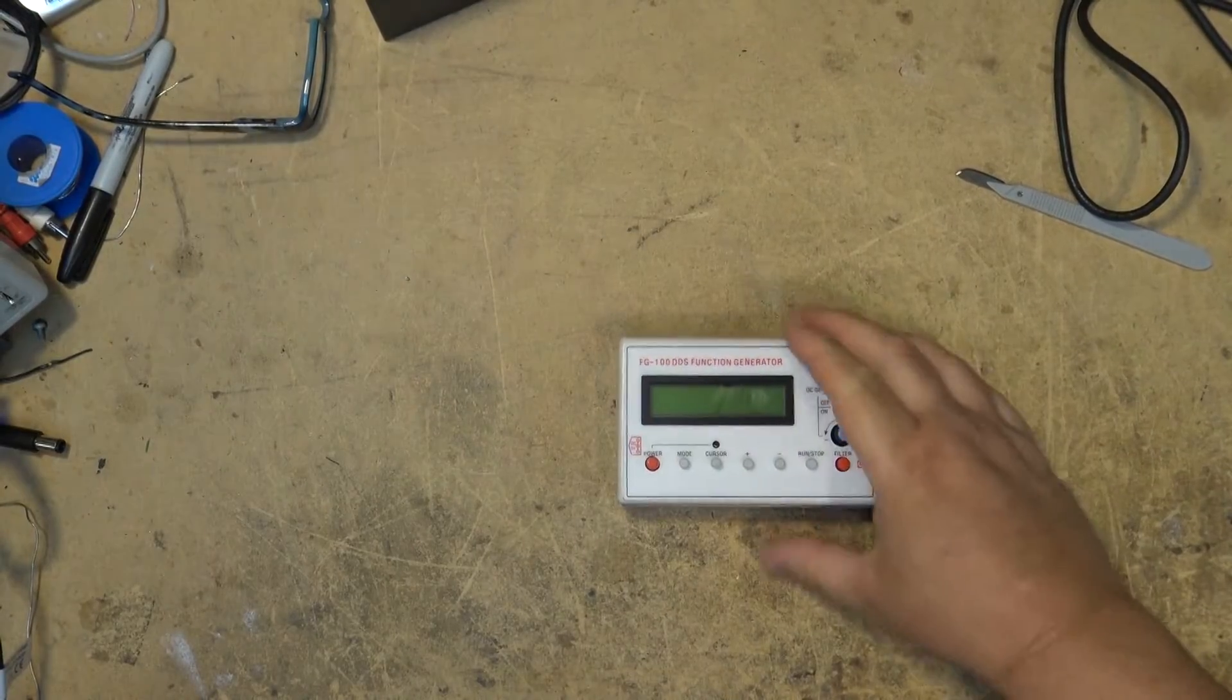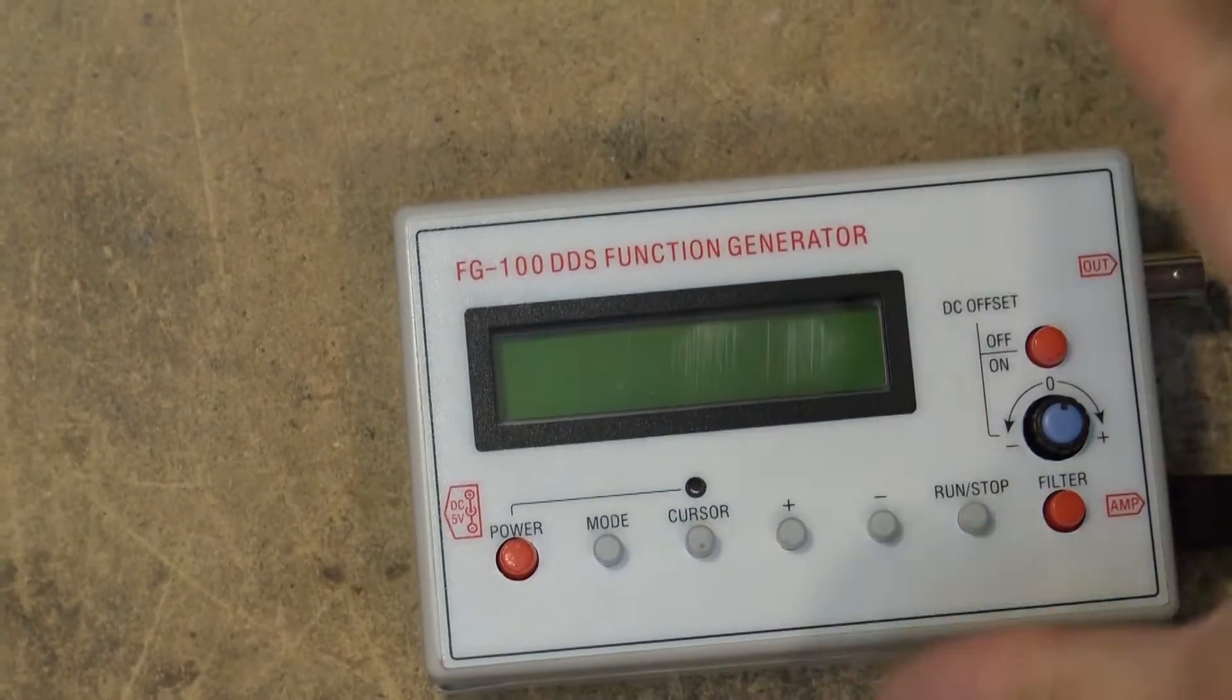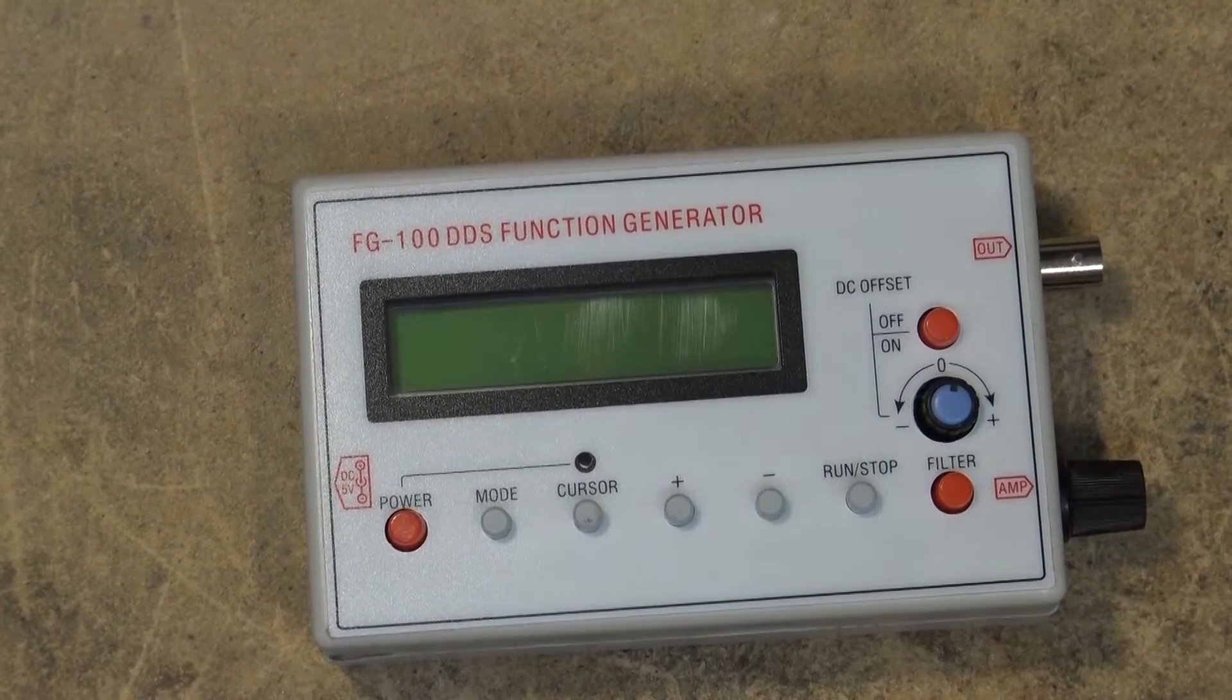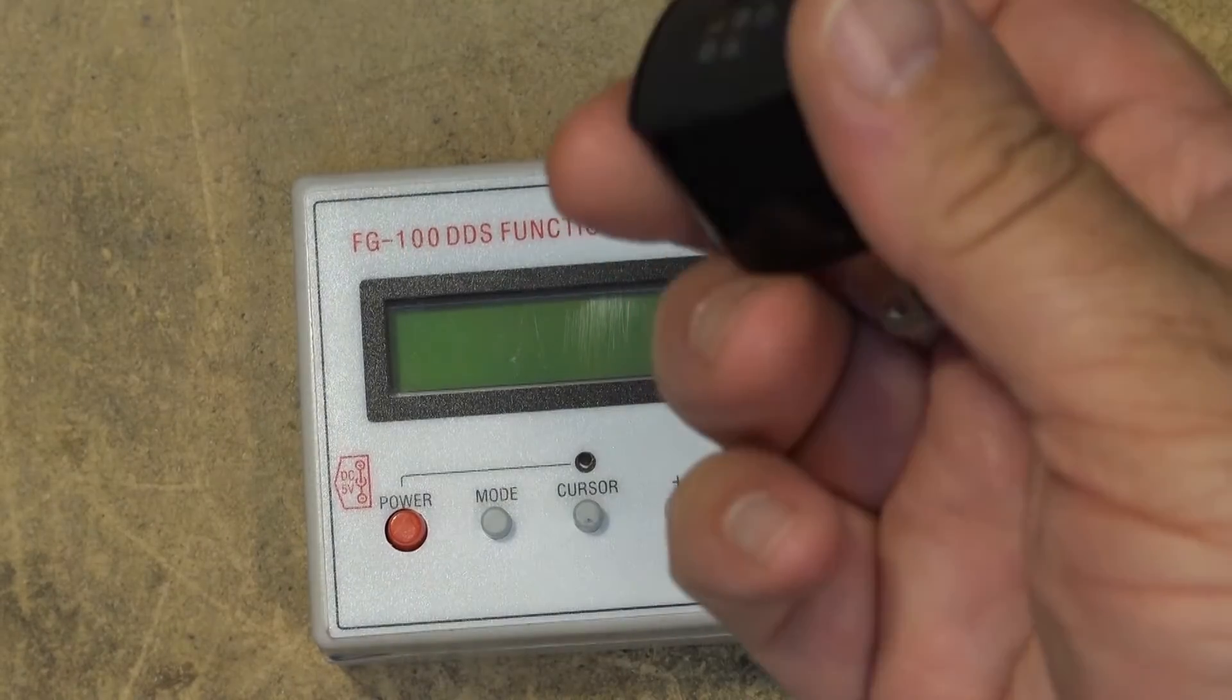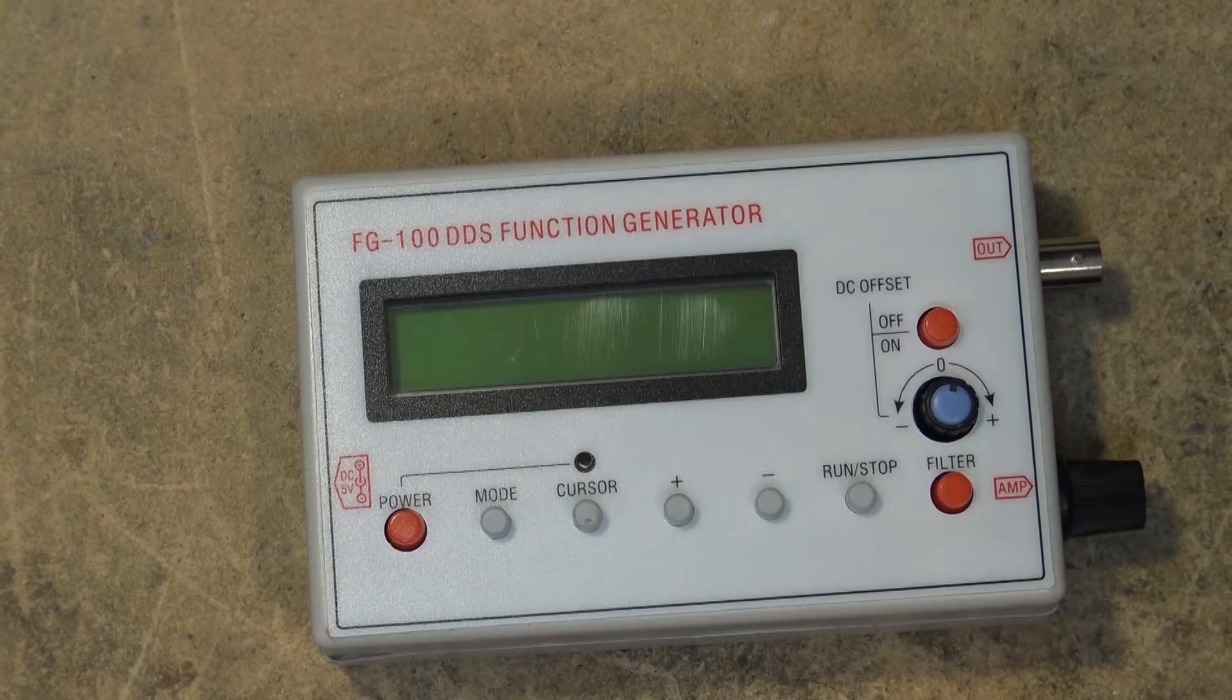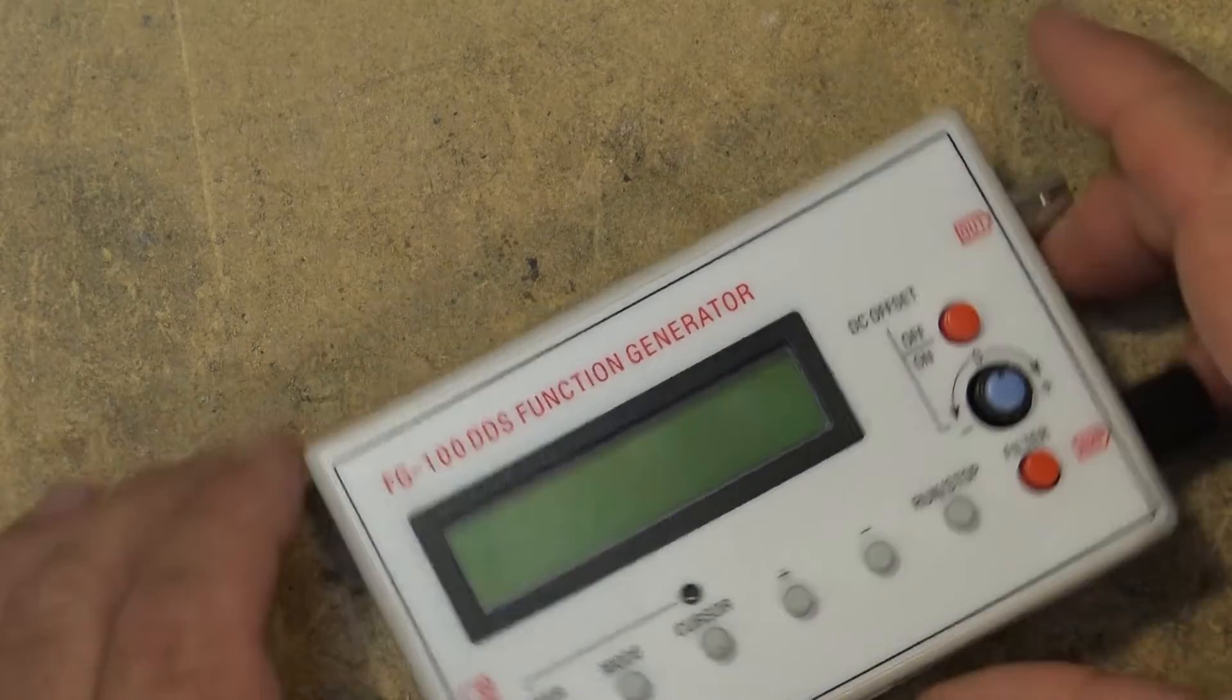Okay what we're looking at here is a function generator. Got this from banggood.com. It's a FG100 DDS function generator. It's powered up with a USB power supply so I'm just going to use a regular old cell phone charger. We'll put power into this thing and see what it does.